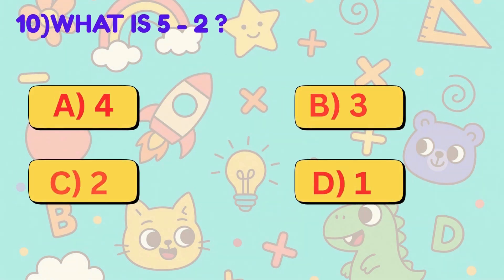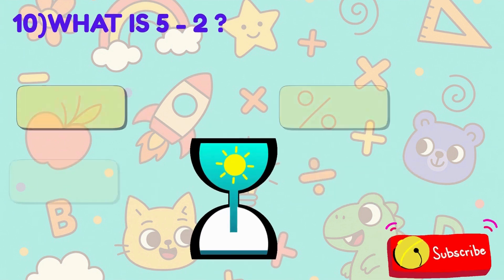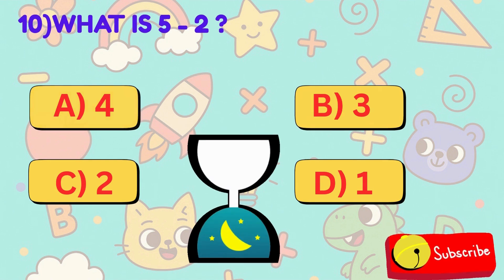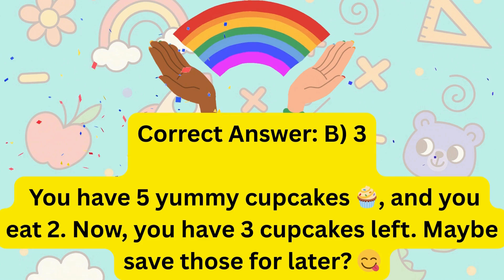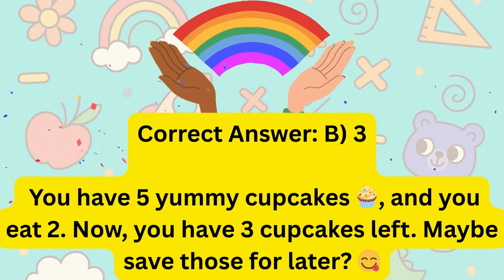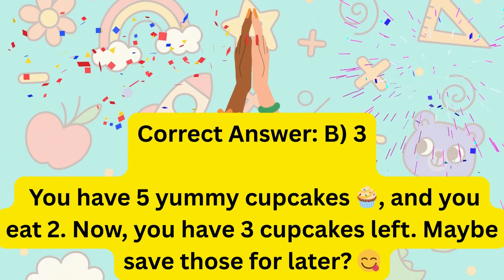10. What is 5 minus 2? Is it A, 4, B, 3, C, 2, or D, 1? Correct answer is B, 3. You have 5 yummy cupcakes and you eat 2. Now you have 3 cupcakes left. Maybe save those for later.